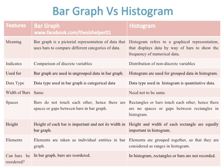Elements are taken as individual entities in bar graph while elements are grouped together so that they are considered as ranges in histogram. In bar graph, bars can be reordered while in histogram, rectangles or bars are not reordered.